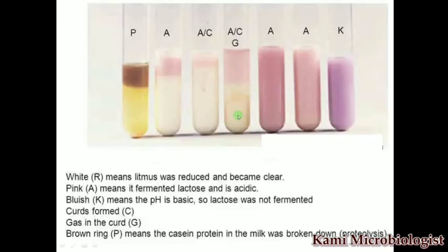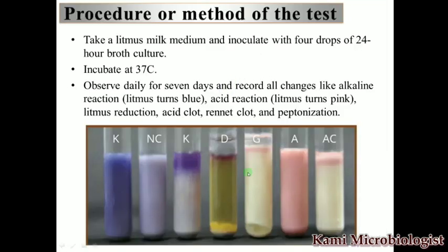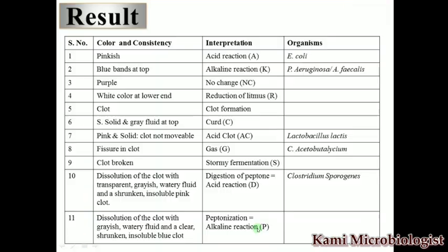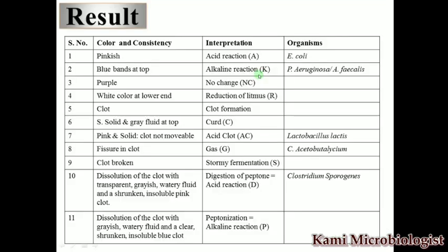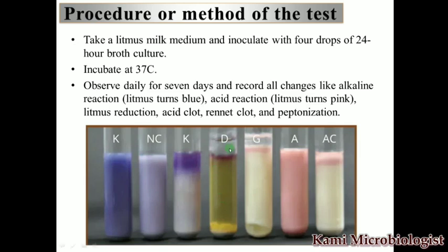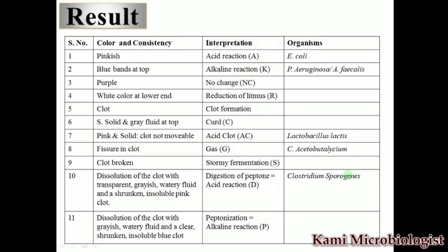Gas formation, where we see fissures in the clot — meaning broken clot — is a characteristic of Clostridium acetobutylicum. Stormy fermentation is also observed as clot formation. Dissolution of the clot with transparent grayish watery fluid and a shrunken insoluble pink clot means digestion of peptone with acid reaction — this is done by Clostridium sporogenes.